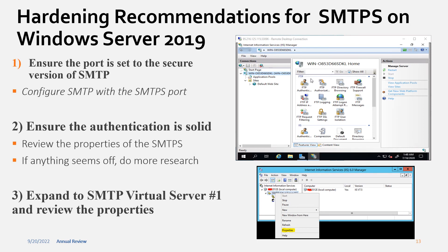For Windows server SMTPS recommendations: first, ensure that the port is set to the secure port — I cannot stress this enough, as we have to ensure ports are being translated to the secure ports. Next, review the authentication established in the Windows server, make sure it's solid, and review the properties. If anything seems off, do more research, then expand to the virtual server and review its properties. Because this is a GUI, I can't provide complete step-by-step hardening instructions — this is something you'll have to look into yourself.